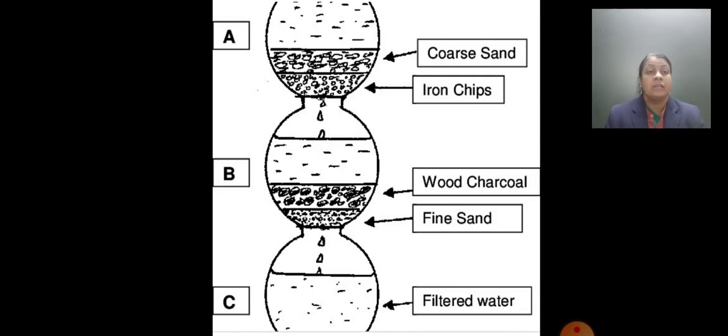Traditionally water is filtered through charcoal. This is coarse gravel and sand. It is also kept in earthenware pots with a hole at the bottom. It is also kept for some time in sunlight to reduce the growth of microorganisms.